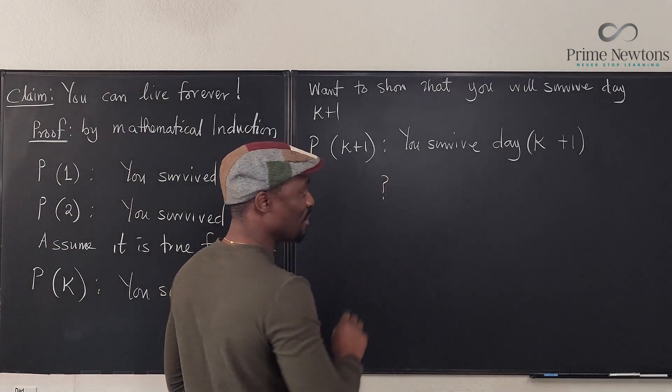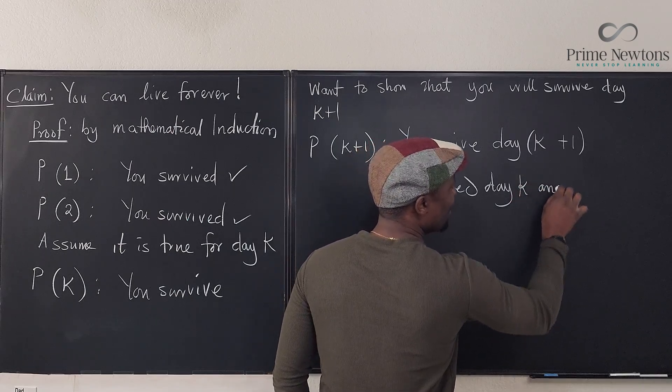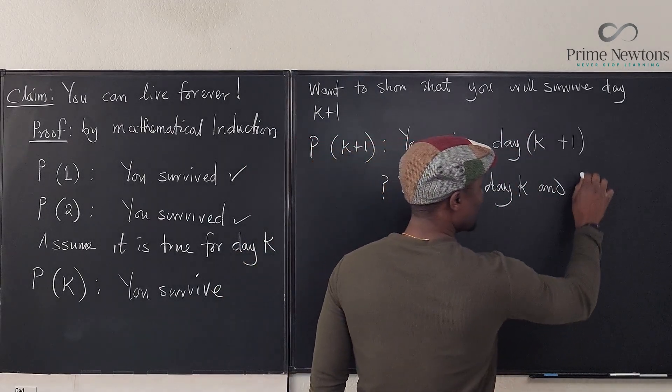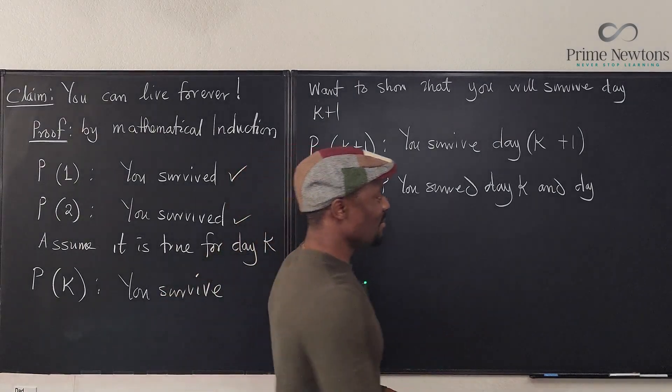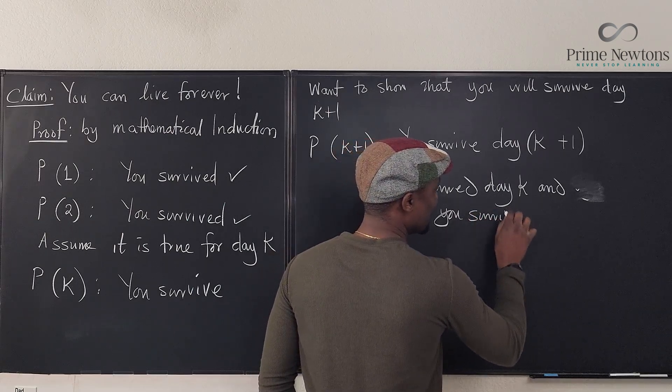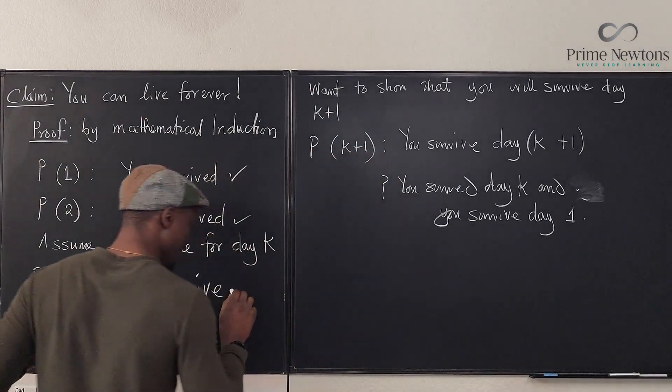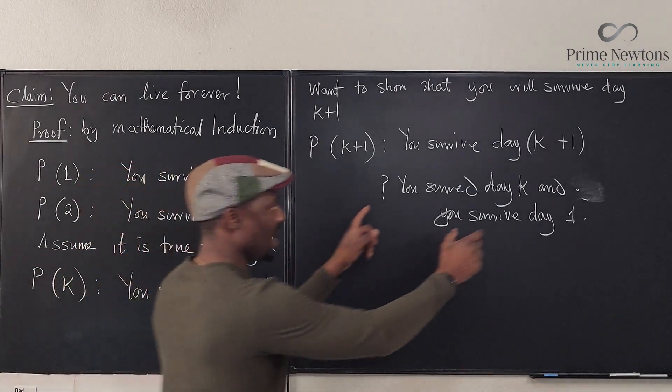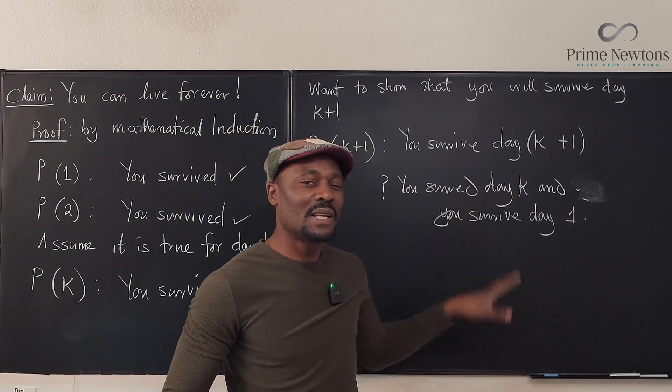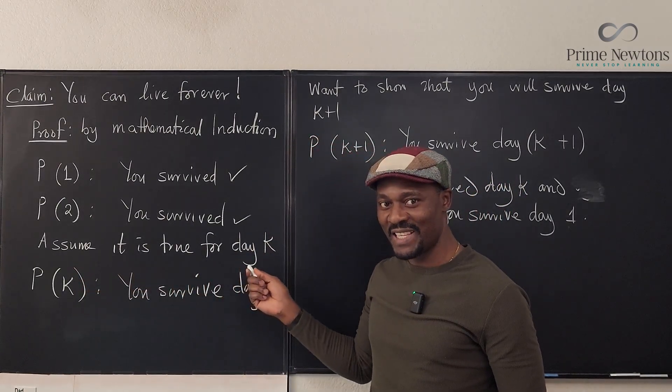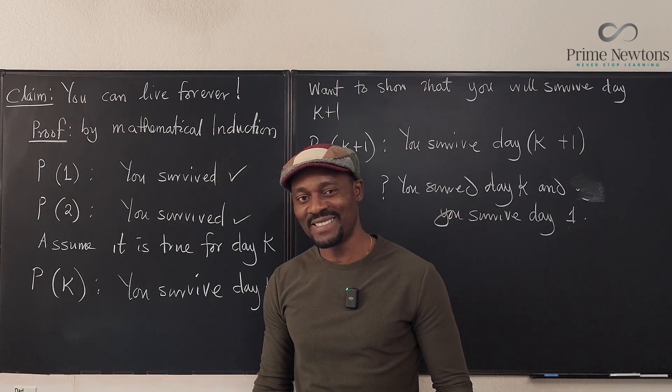I'm going to put the question mark at the beginning. You survive day K and you survive day one. We're going to make this claim assuming it's just the number one. So the point is really if you survive day K, you're going to survive the day after it, one more day. Well, it doesn't make any sense. Because the problem with this claim is that we are assuming it is true for day K. What makes you think it is true? We cannot make assumptions about things like this because they're not mathematical.